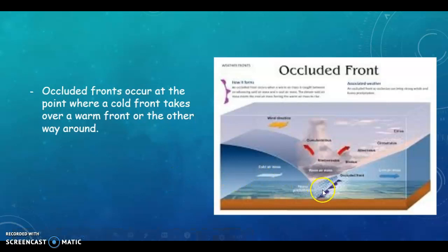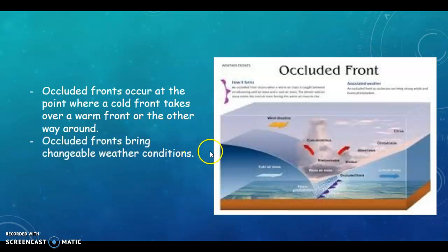So you can see here in the diagram that there's a lot going on with your occluded front. So we have our cold air coming in. We have warm air rising. We have cold air moving on. So there's just, there's a lot going on. Occluded fronts occur at the point where cold front overtakes a warm front or the other way around. And occluded fronts give changeable weather conditions. So that's as much as you need to know about it really. So changeable weather here.